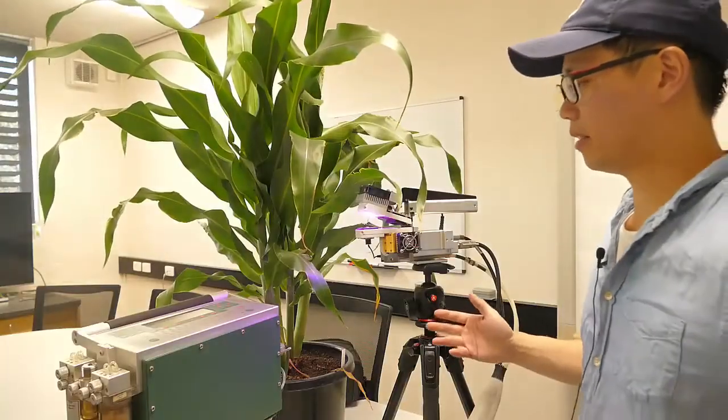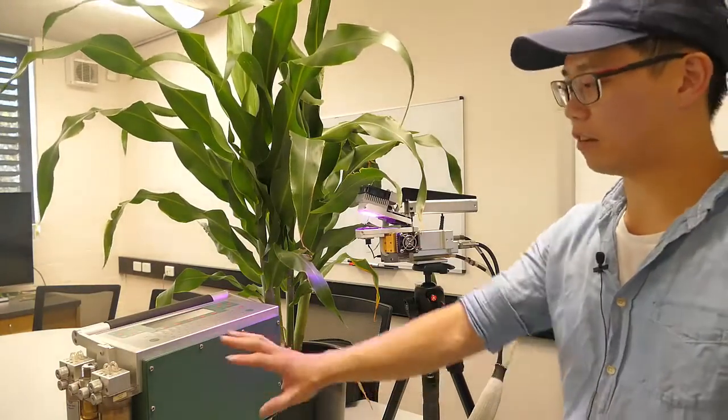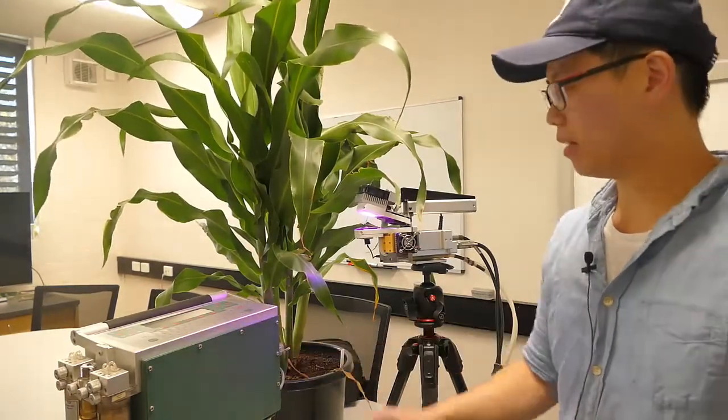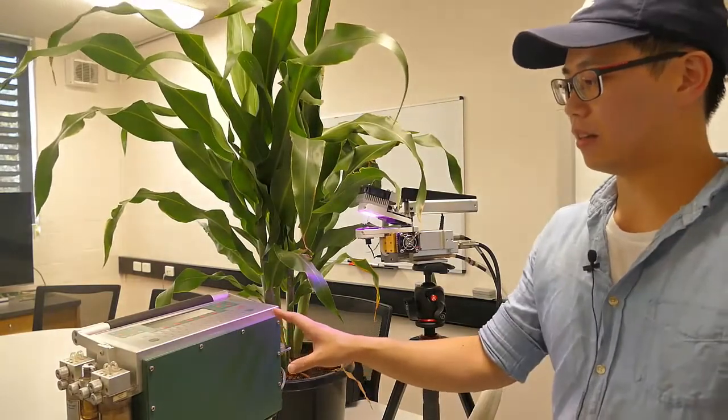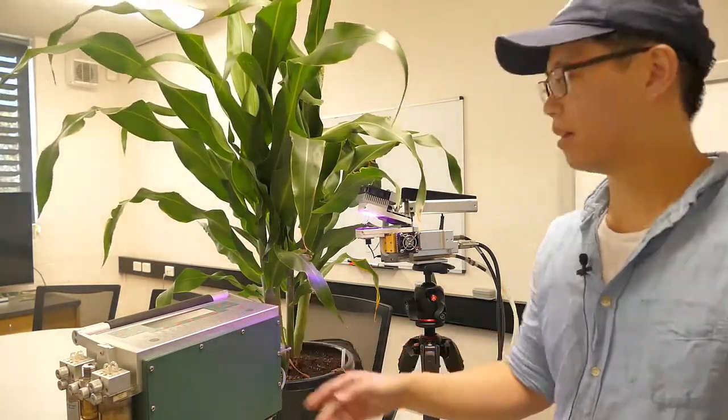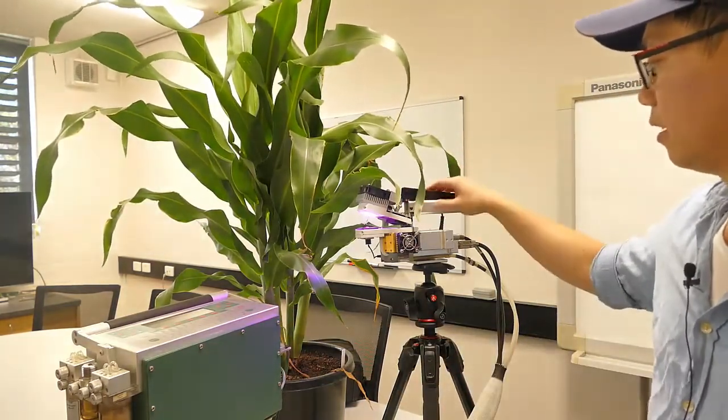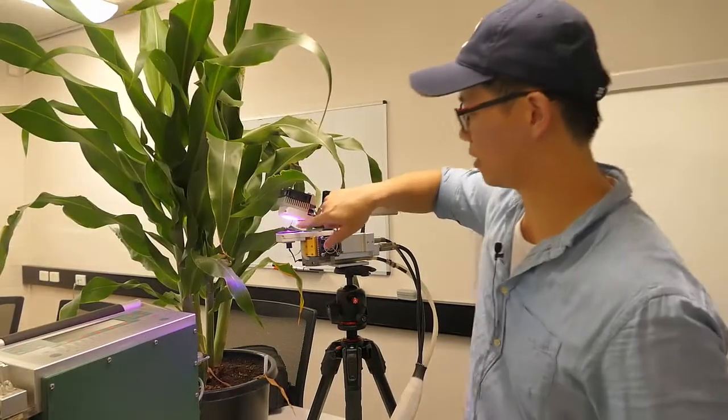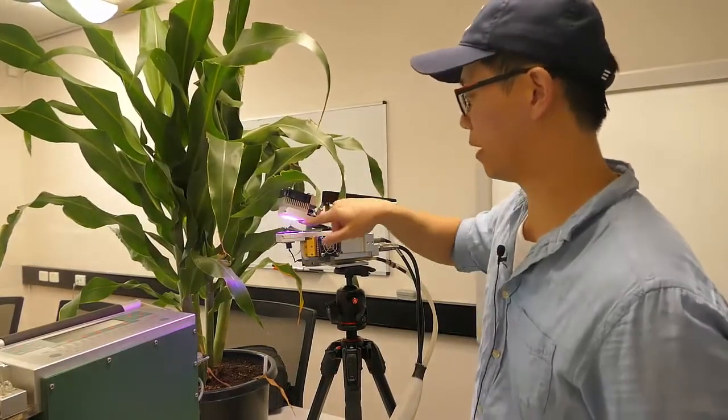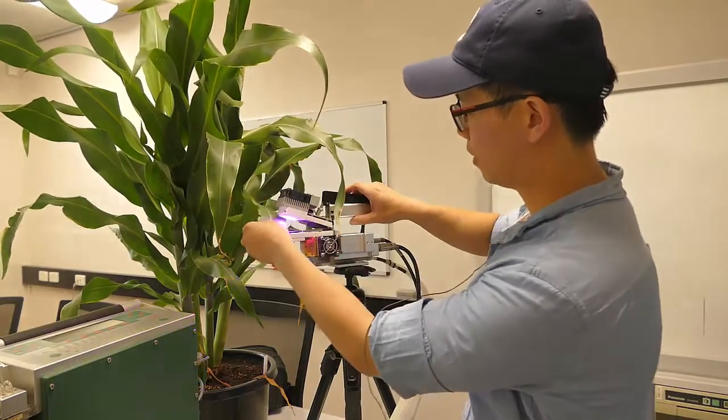So the way this machine works is you have the main console here. It has all the electronics in the box. It measures the change in CO2 and water vapor. If you come over here, there's the Licor head, and you can see there's a chamber. What you do is you clip your leaf inside this chamber.